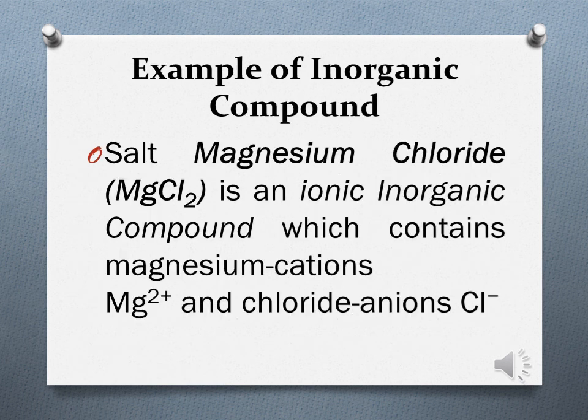An example of an inorganic compound is salt. Magnesium chloride, MgCl2, is an ionic inorganic compound which contains magnesium cations, Mg2+, and chloride anions, Cl-.